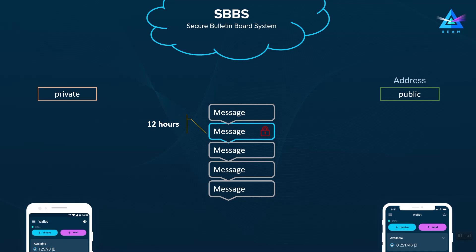Currently, the SBBS system has two key limitations. First, the wallet doesn't know that an SBBS message was sent and hence doesn't know when to go online, and also it has to be online within 12 hours of the message being sent in order to receive it, process it, and send the response.